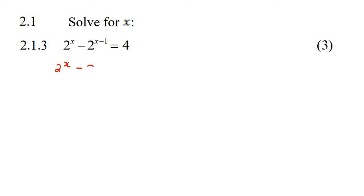So we can write this as 2 to the x times 2 to the minus 1 equals 4. Now we can take out a common factor of 2 to the x, and we're left with 1 minus 2 to the minus 1. That's equal to 4.